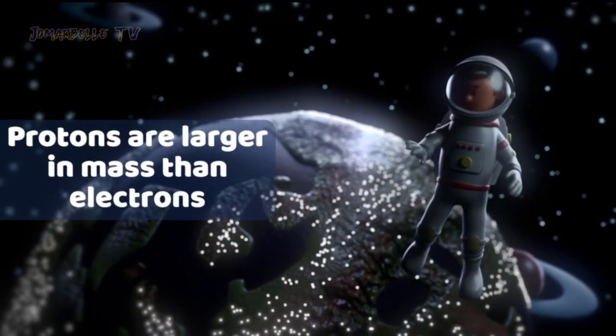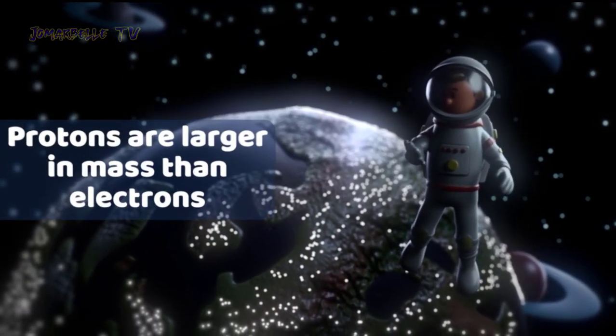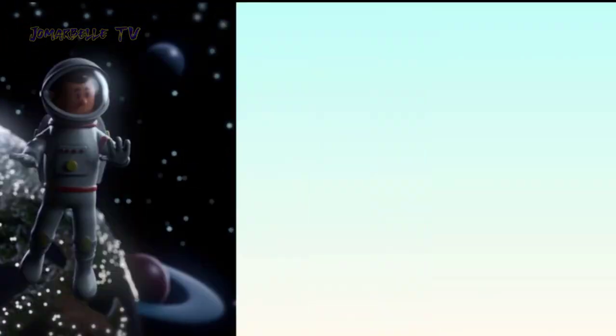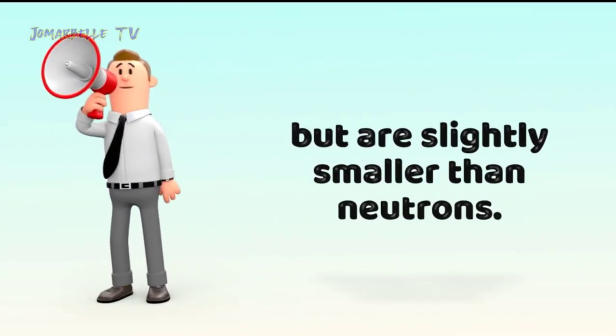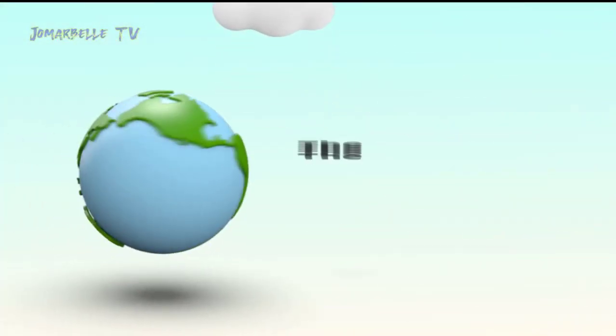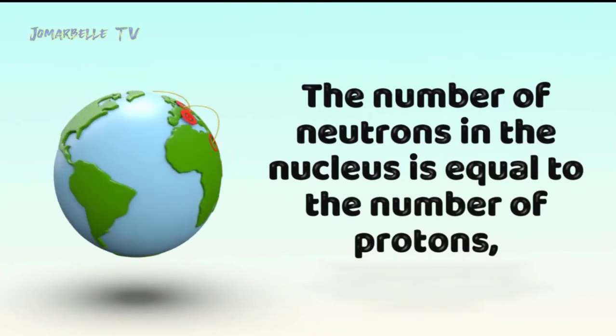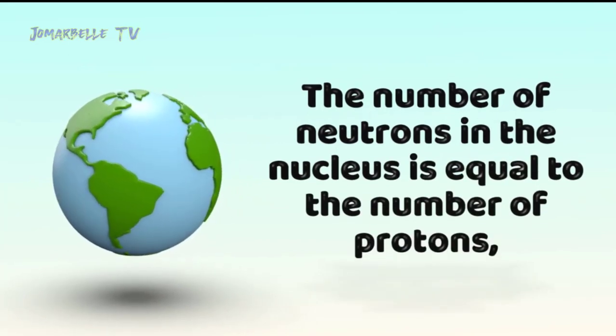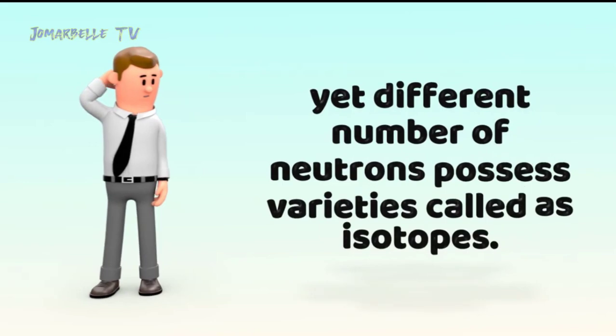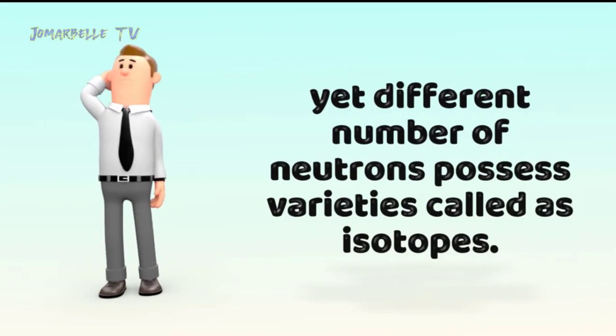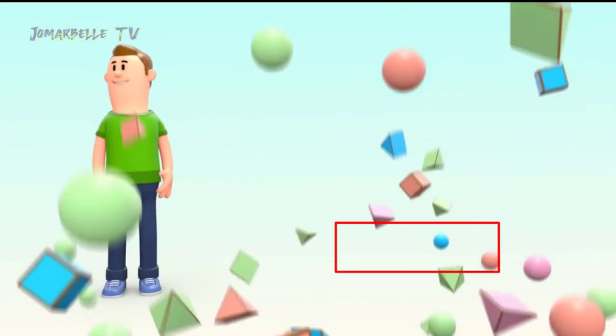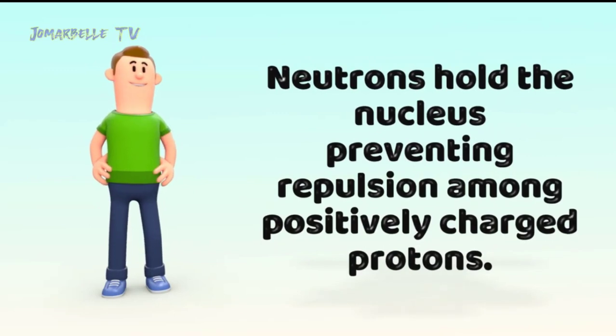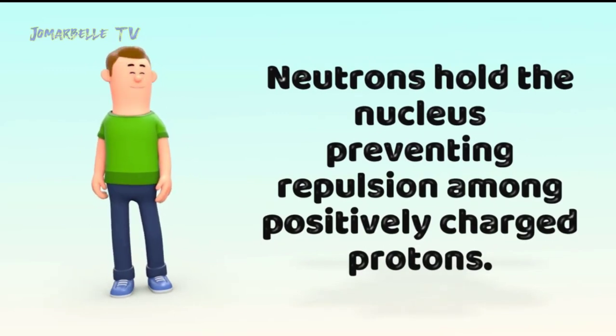Protons are larger in mass than electrons but are slightly smaller than neutrons. The number of neutrons in the nucleus is equal to the number of protons, yet different number of neutrons possess varieties called isotopes. Neutrons hold the nucleus, preventing repulsion among positive-charged protons.